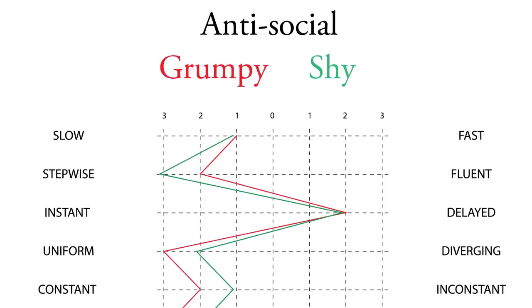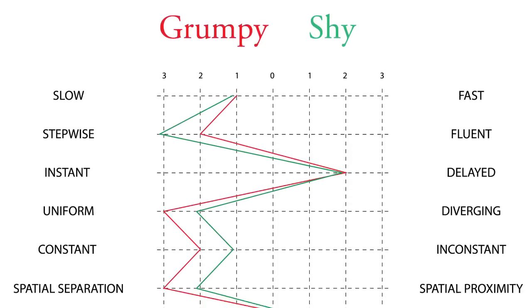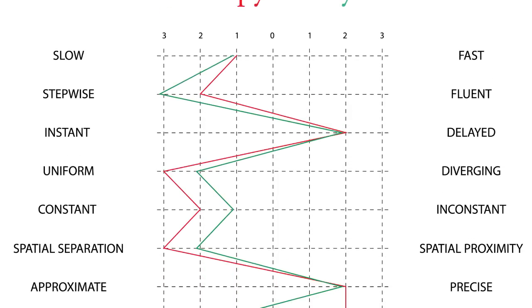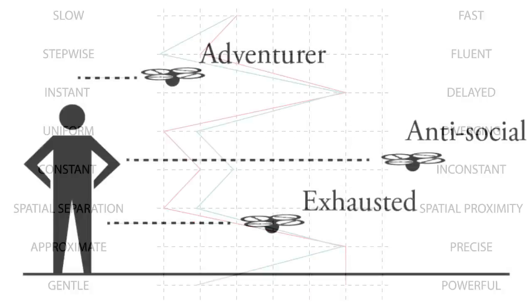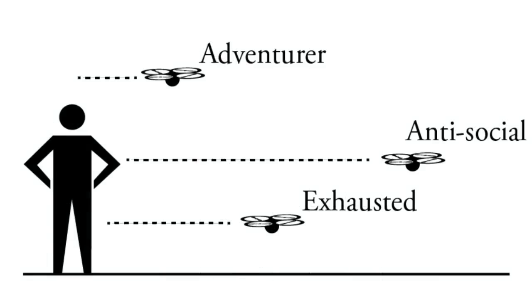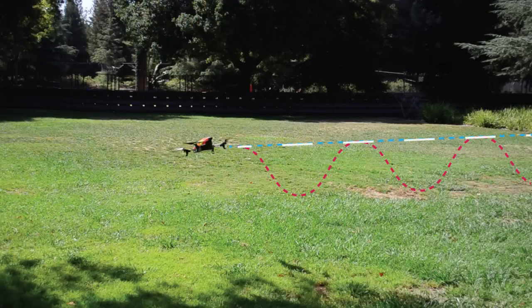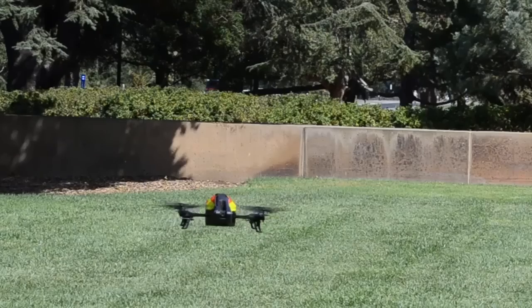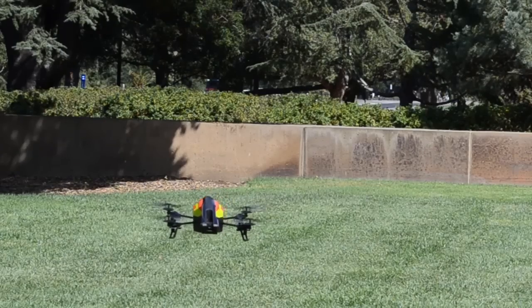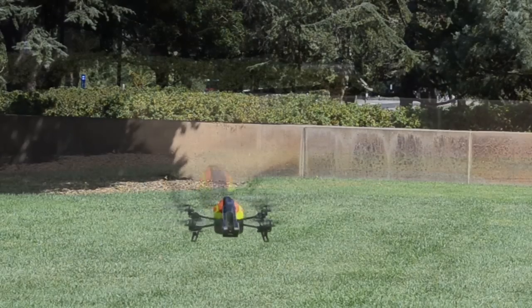We developed three distinct personality profiles based on parameters such as flight height, flight curve, and reaction time to commands. The three profiles were adventurer, antisocial, and exhausted, each with different movements and responses to the same commands.